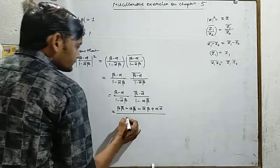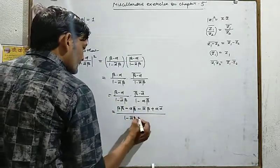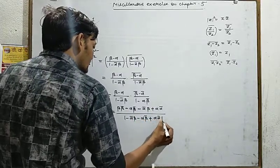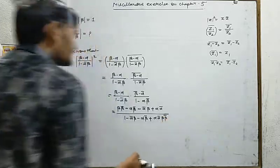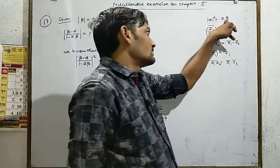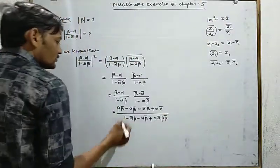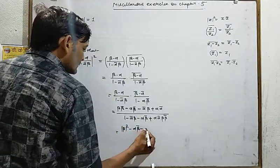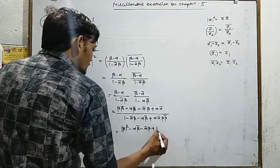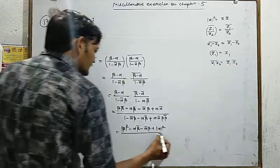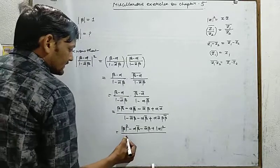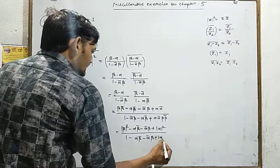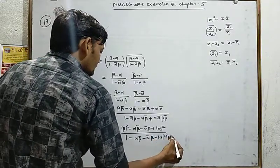Expanding the numerator: (beta minus alpha)(beta-bar minus alpha-bar) = beta·beta-bar minus alpha·beta-bar minus alpha-bar·beta plus alpha·alpha-bar. Denominator: (1 minus alpha-bar·beta)(1 minus alpha·beta-bar) = 1 minus alpha·beta-bar minus alpha-bar·beta plus alpha·alpha-bar·beta·beta-bar. Using z·z-bar = mod z square, beta·beta-bar = mod beta square and alpha·alpha-bar = mod alpha square.